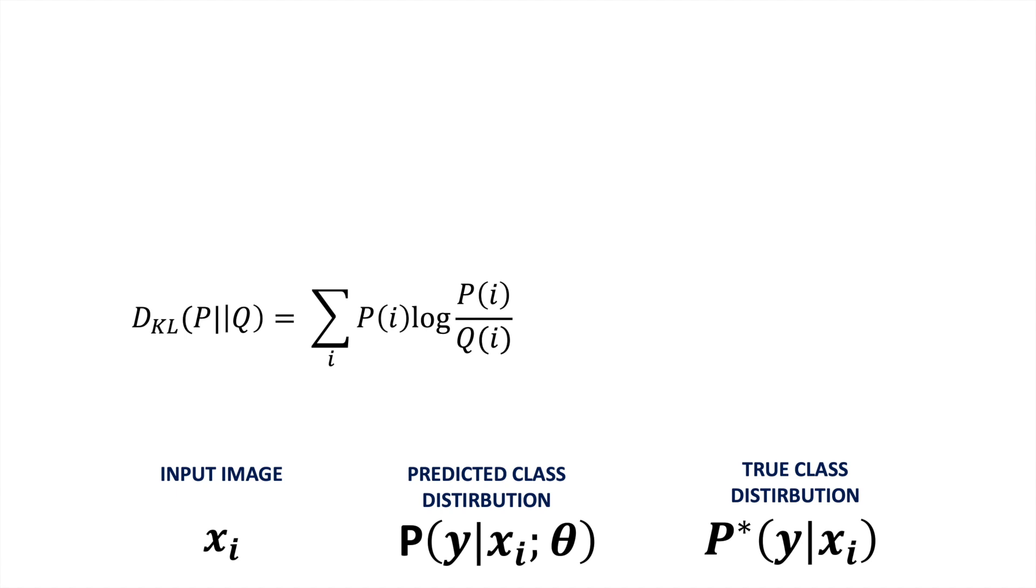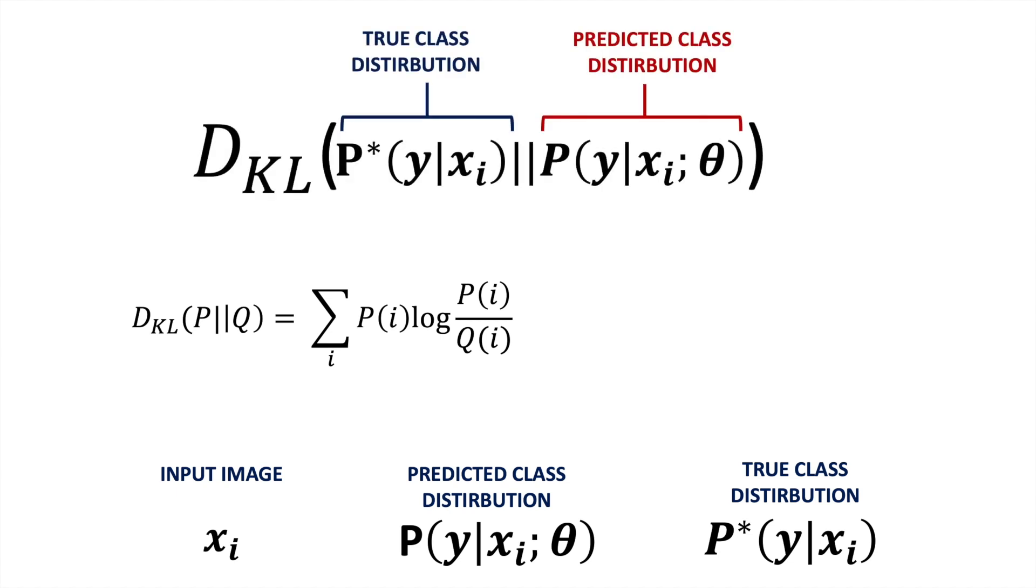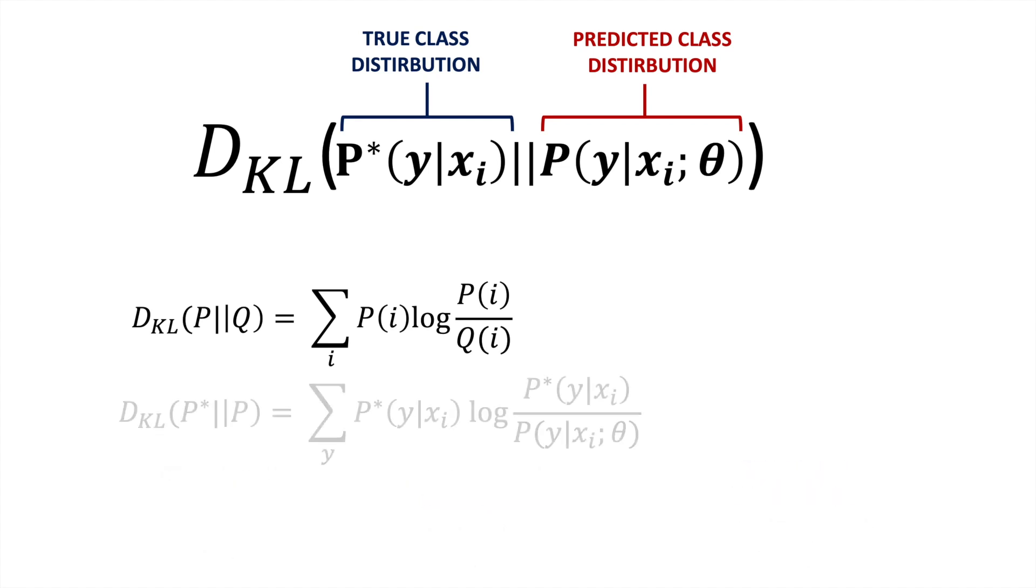Therefore, an intuitive loss function would be to minimize the KL divergence between the model and the true distribution. So if we expand the formula, we have an expression which, if we minimized, will bring our model distribution close to the true underlying one.